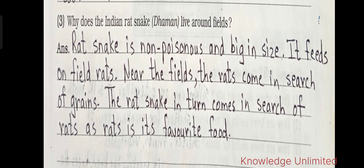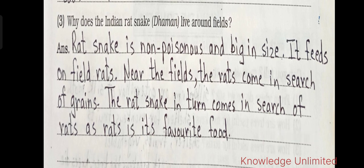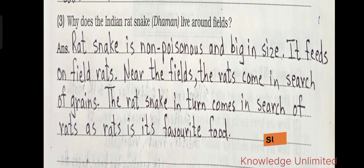Question three: why does the Indian rat snake (dhaman) live around fields? The rat snake is non-poisonous and big in size. It feeds on field rats. Near the fields, rats come in search of grains, and the rat snake in turn comes in search of rats, as rats are its favorite food.